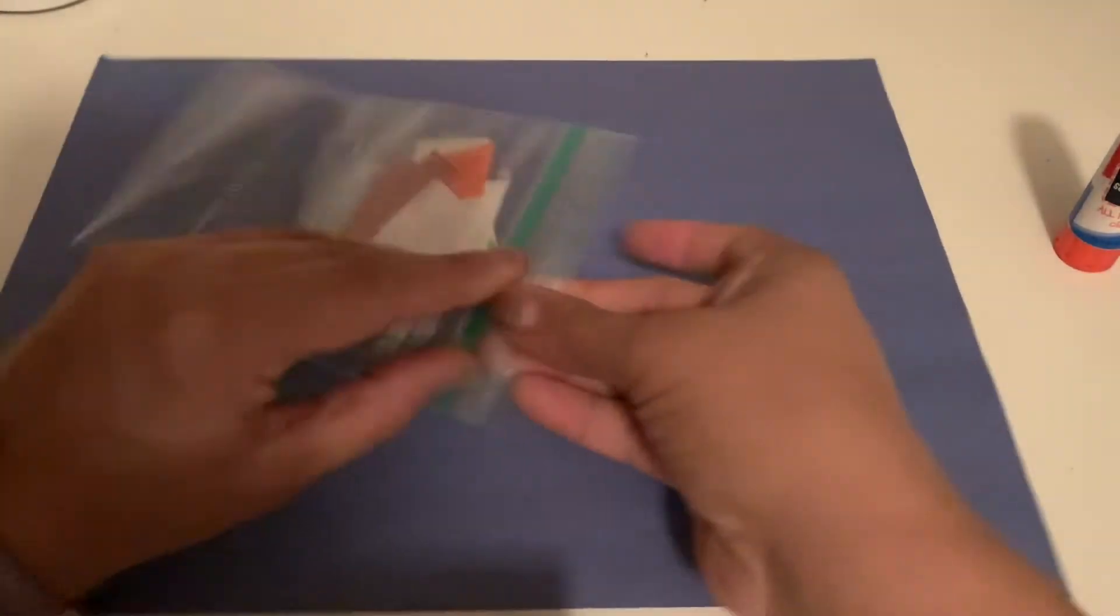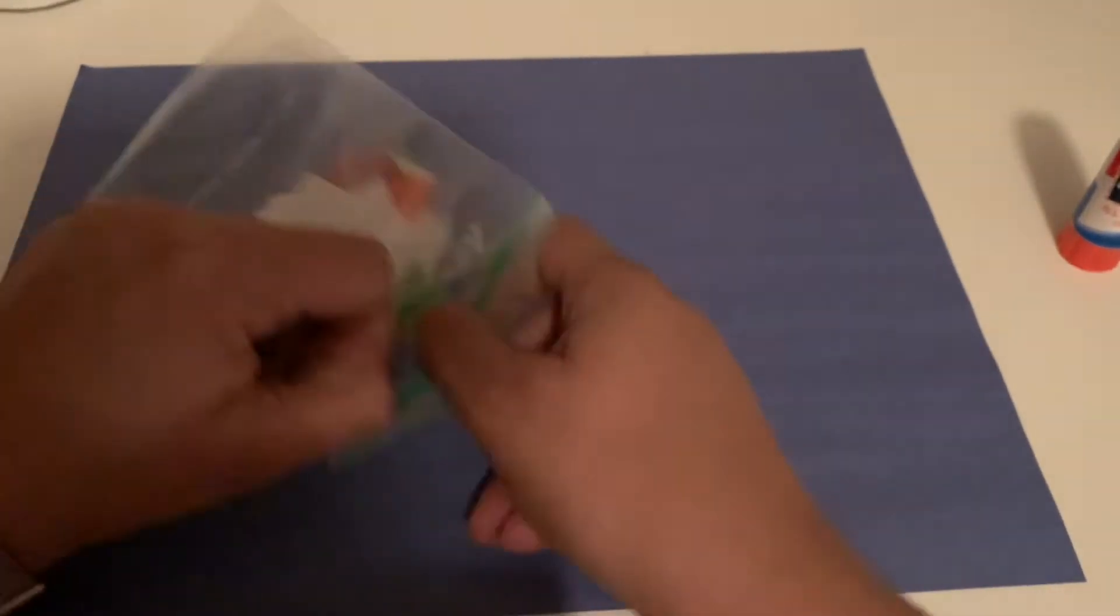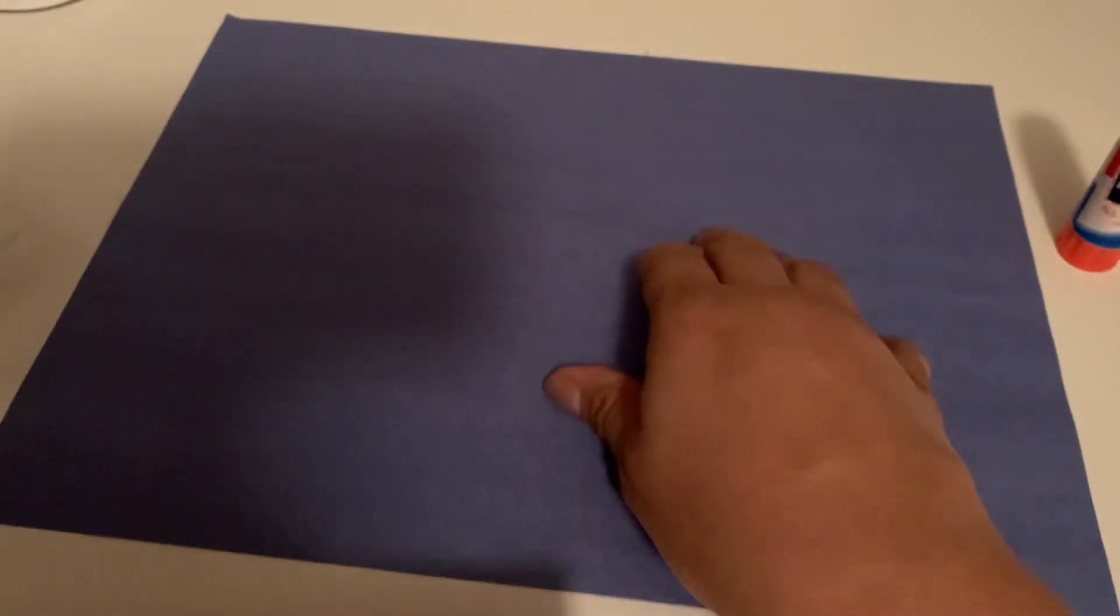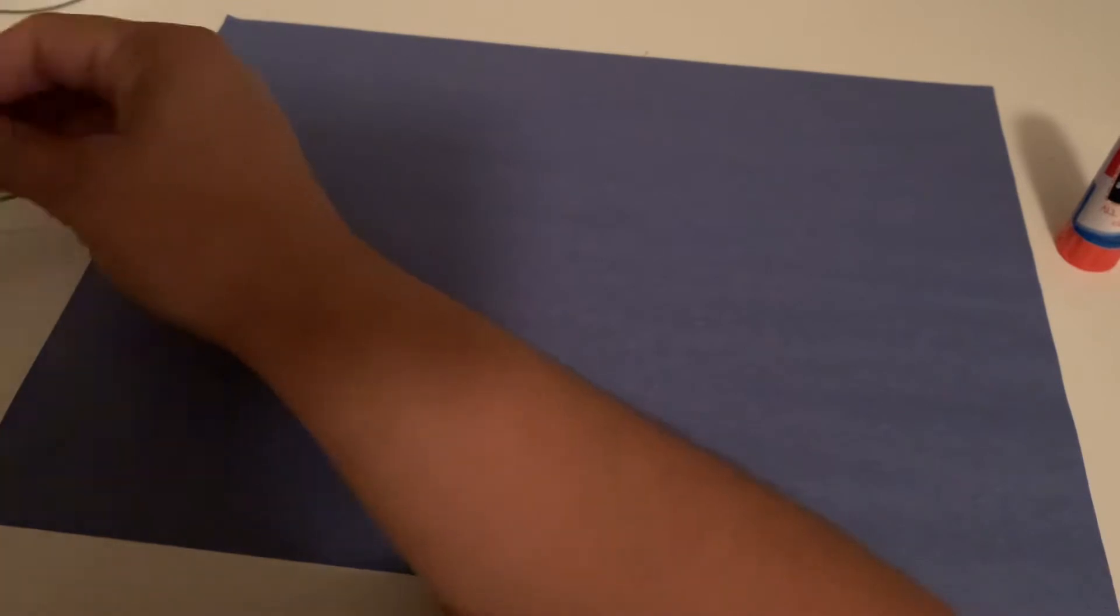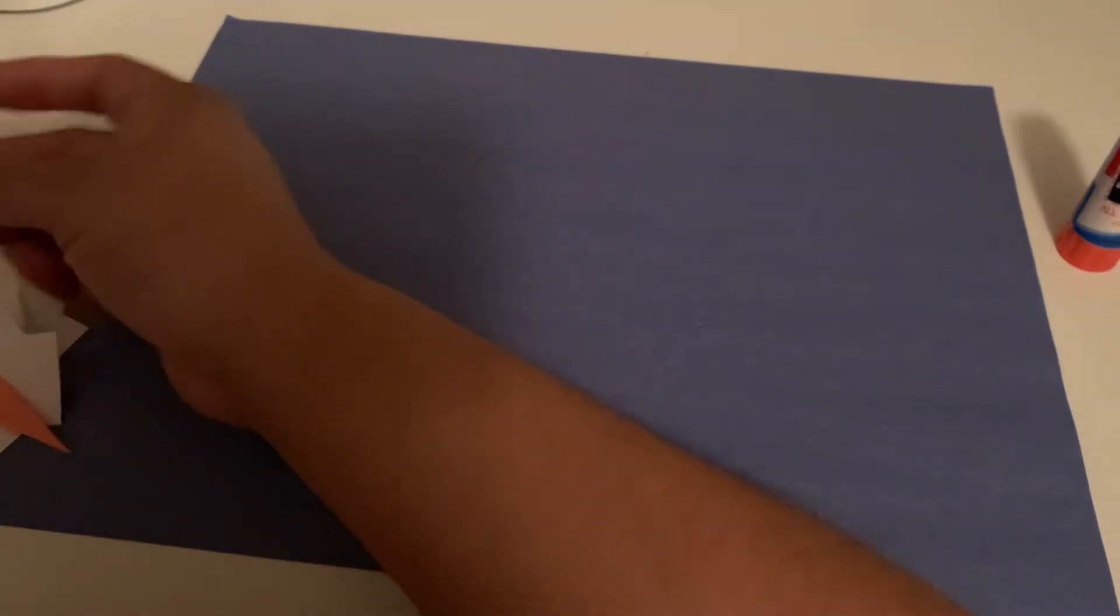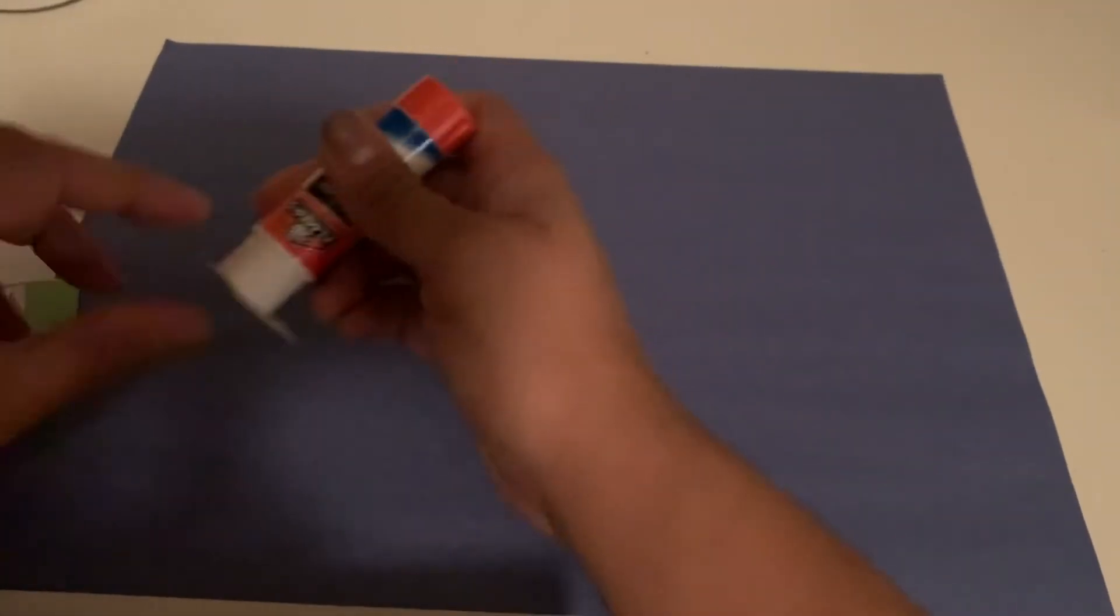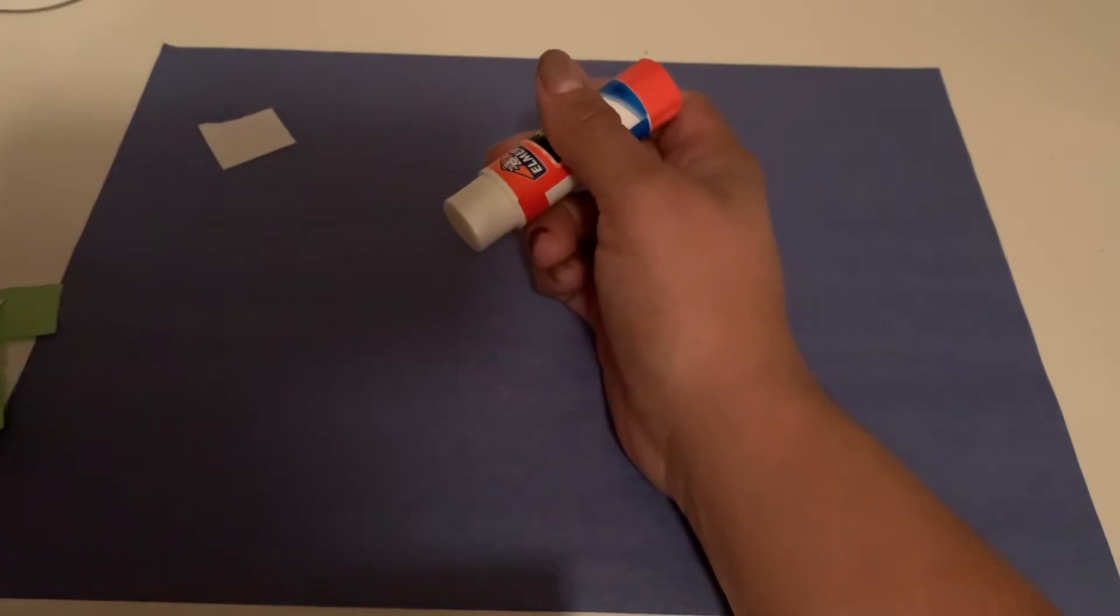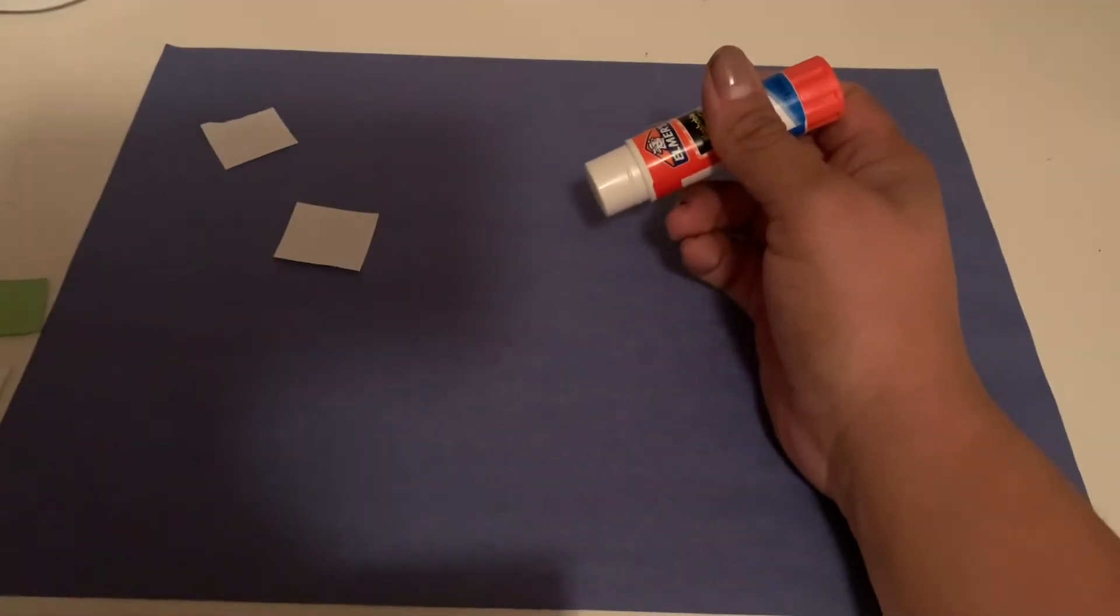So what you guys are going to do is take out all your pieces and put them on the side. And then what I want us to do first is we're just going to glue the white pieces onto our blue paper anywhere we want. It's a melting snowman, so you can just glue them wherever you want.